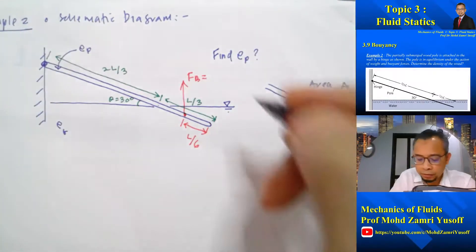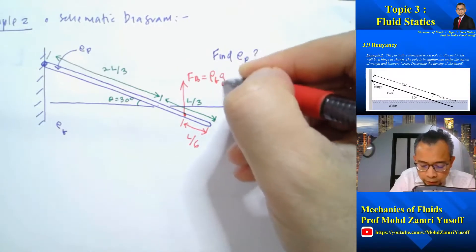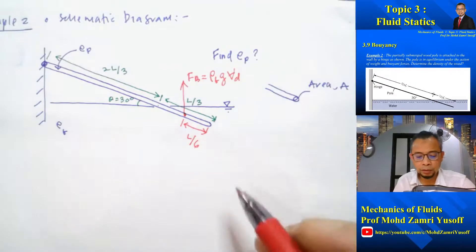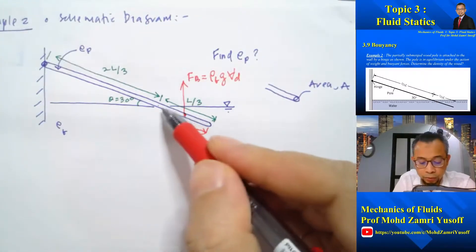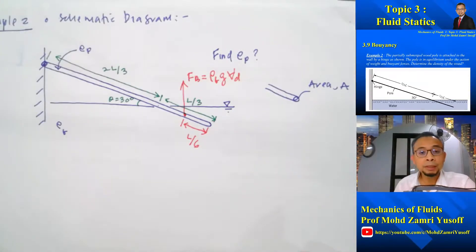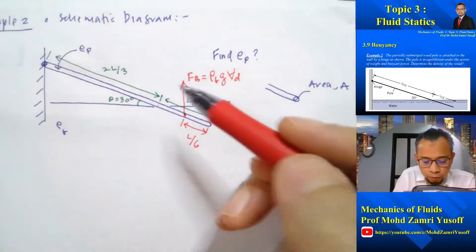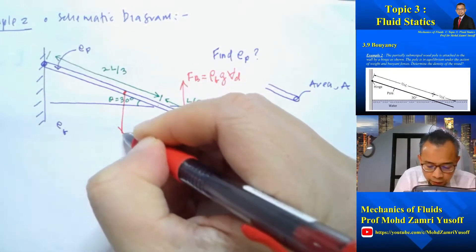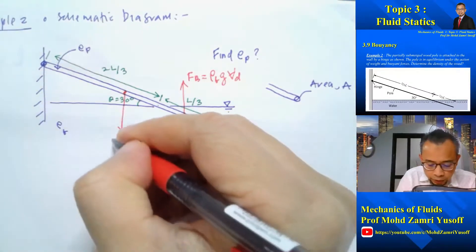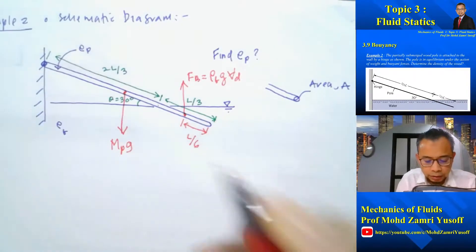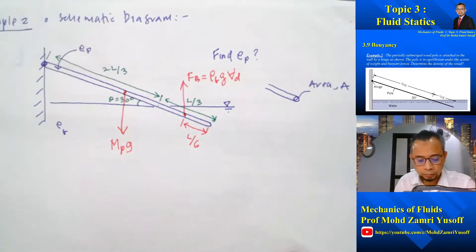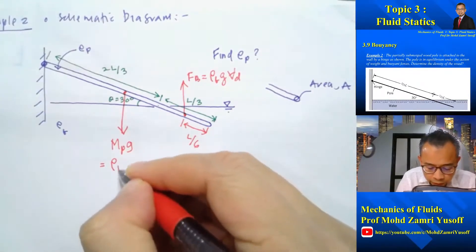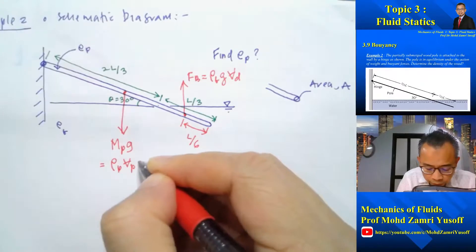The buoyancy force equals ρ_fluid × g × V_displaced, where the displaced volume is the volume of the submerged portion. The gravitational force due to weight acts at the centroid of the pole, which is right in the middle at L/2 from the hinge, acting directly downward. It equals ρ_pole × V_pole × g.